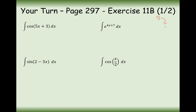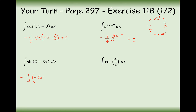So I've spotted we've got a few trigonometric-style integrals, so I'm just going to write out my circle of integration. Cos integrates back round to sine, but we don't multiply by 5 to the front — we divide by 5. So it's going to be 1 over 5 sine(5x + 3) plus c. For the next one, it's going to be 1 over 4 e to the 4x plus 7 — we divide the 4 to the front. For this one, sine integrates to minus cos, and we divide by minus a third, giving minus a third times minus cos(2 - 3x). The double negative cancels, so it's a third cos(2 - 3x) plus c.